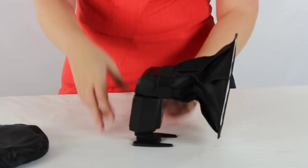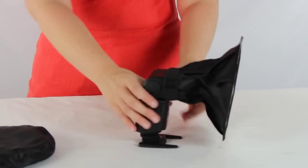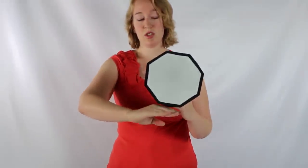So this is good for working off camera flash, but you'll notice it's also small enough that if I had a camera here, I'd be able to shoot above the line of the camera without the softbox interfering with the lens. So this is really great for using on camera as well as off.